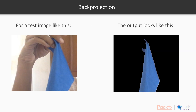So if we use the previously computed histogram of that blue image and use it to apply back projection on this test image, we can get a resulting image which looks like the one on the right. We have completely segmented only that part of the image which was similar to the image on which we calculated the histogram. We can use this exact same technique to locate objects using their color as well. The only difference being that we will have to compute the histogram of that color first.